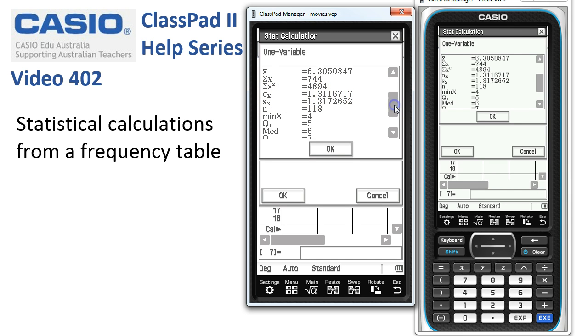If we slide the slider down a little bit, we can see there are other calculations. The median is 6. There's a mode of 6, and mode n says there's one of them with a frequency of 34.